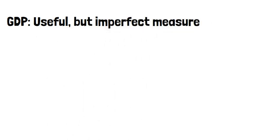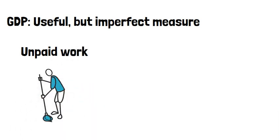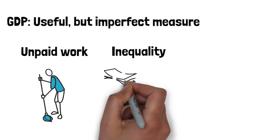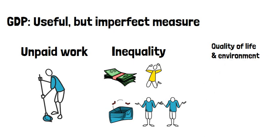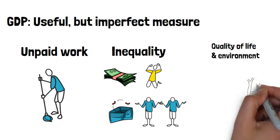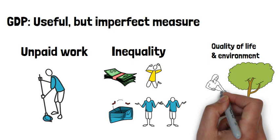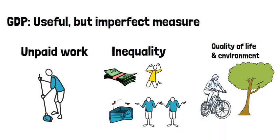Although GDP is a useful measure of well-being, there are some limitations. First, GDP does not include the value of activities that are not paid for, such as housework or volunteering. Second, the level of GDP does not tell us about the distribution of income. Even when overall GDP per capita is high, there may be a few extremely rich and many poor people in the country. Also, GDP does not take into account the quality of the environment or other aspects of the quality of people's lives. It is possible to increase GDP by taking less vacation, but this may not make people happier.